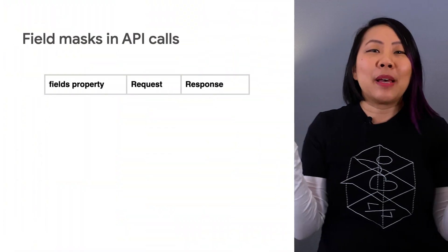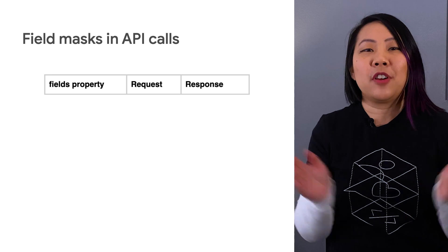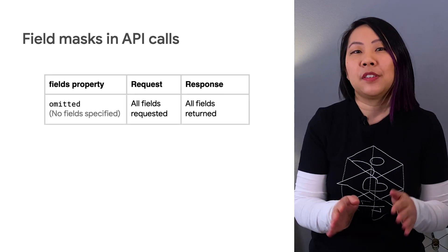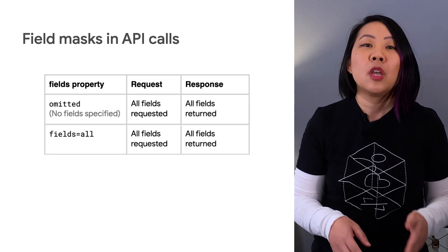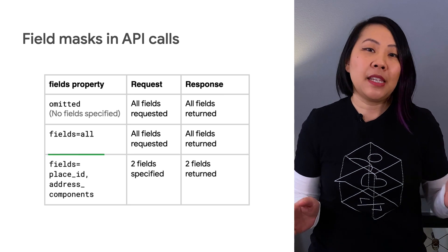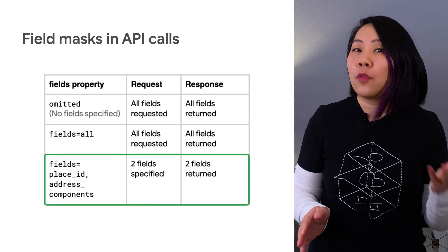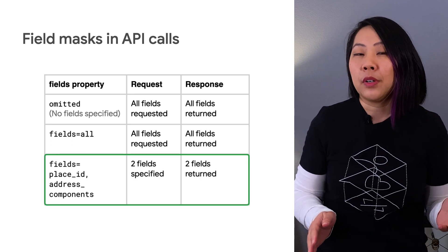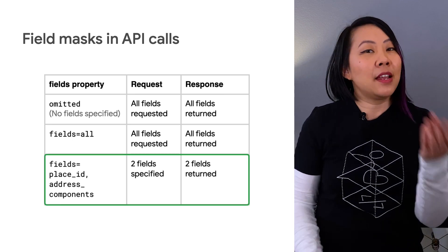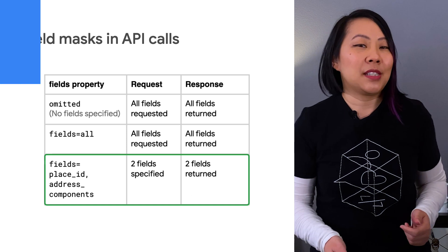Field masks are a way for API callers to list the fields that a request should return. Using field masks allows the API to avoid unnecessary work, improves performance, and reduces your costs.